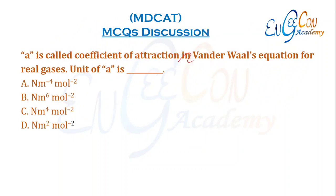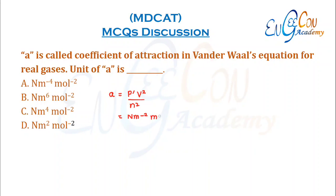'a' is called the coefficient of attraction in the Van der Waals equation for real gases. Units of 'a': since a = P' × V² / n², the units of pressure are N/m², volume is m³, so V² is m⁶ divided by mol⁻². Therefore the units are N·m⁴·mol⁻². So C is the correct option.